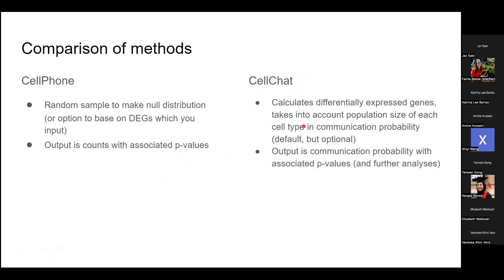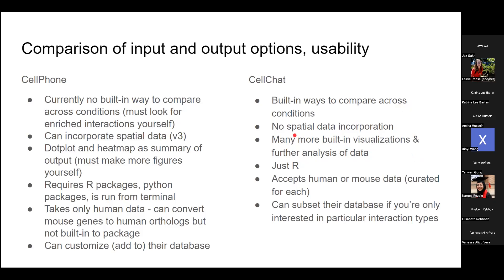CellChat also calculates differentially expressed genes rather than requiring you to input them. It takes into account population size of each cell type in calculations — though if you've done FACS sorting and don't want population size considered, you can tell it not to. The output is communication probability with associated p-values and a bunch of further analysis.